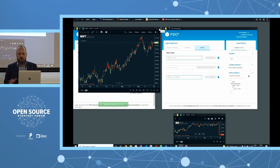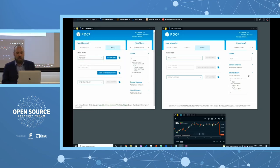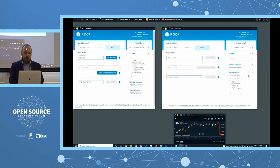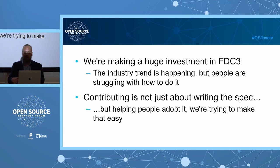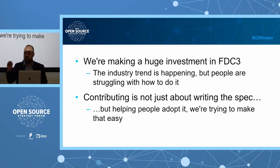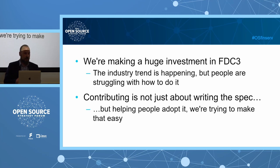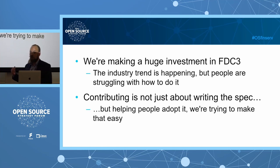That covers the basic operations in FDC3. There's a bit more to add with app channels, and a bunch of other things coming in FDC3 2.0 that will be represented in the workbench. Why are we open sourcing it rather than shipping it as a FinSombal product? We're making a huge investment in FDC3 — FinSombal as a desktop agent, ChartIQ with built-in support — and we know the industry trend is happening. But firms and individual developers are struggling to get started, and contributing to FDC3 means not just writing the spec but helping people actually adopt it.